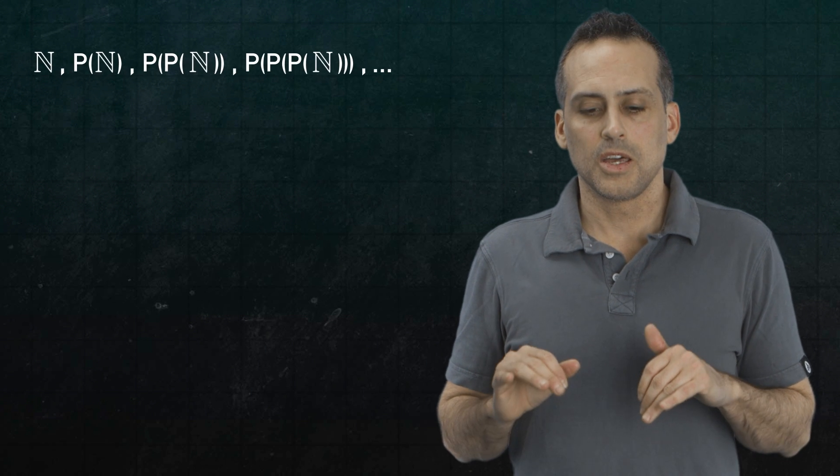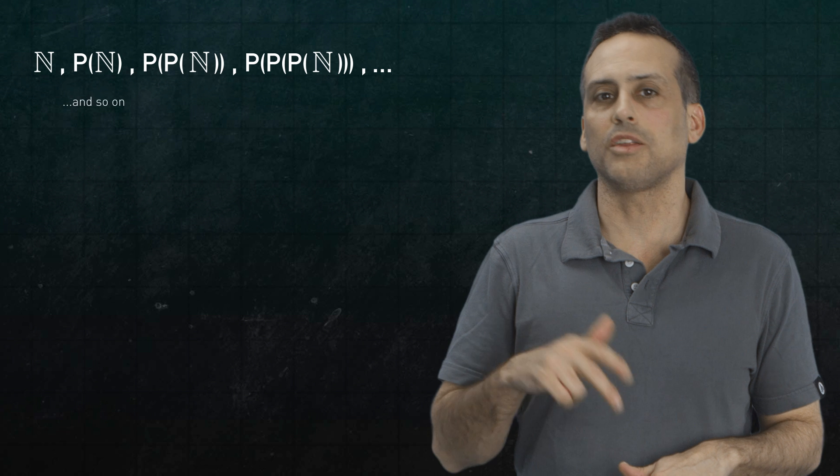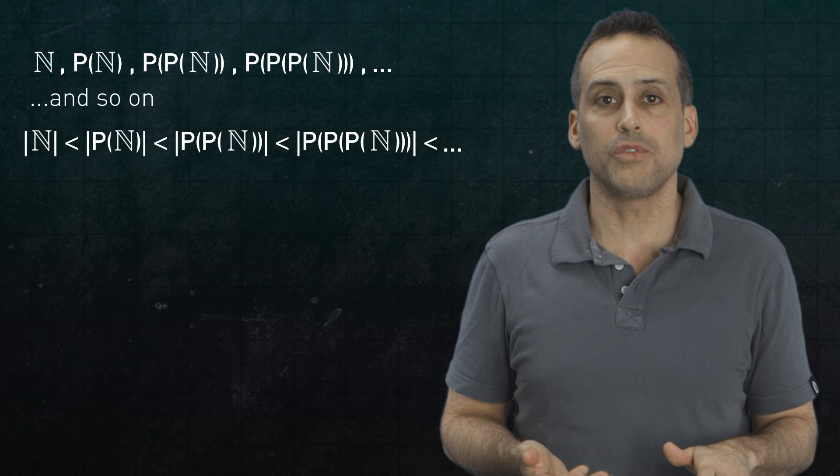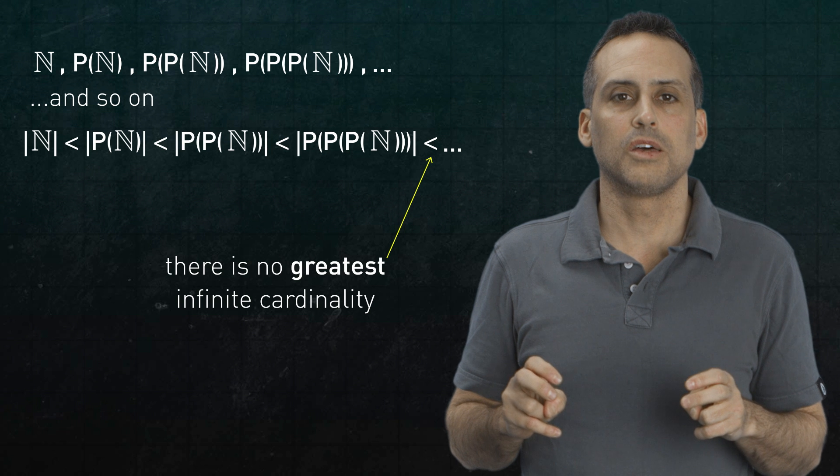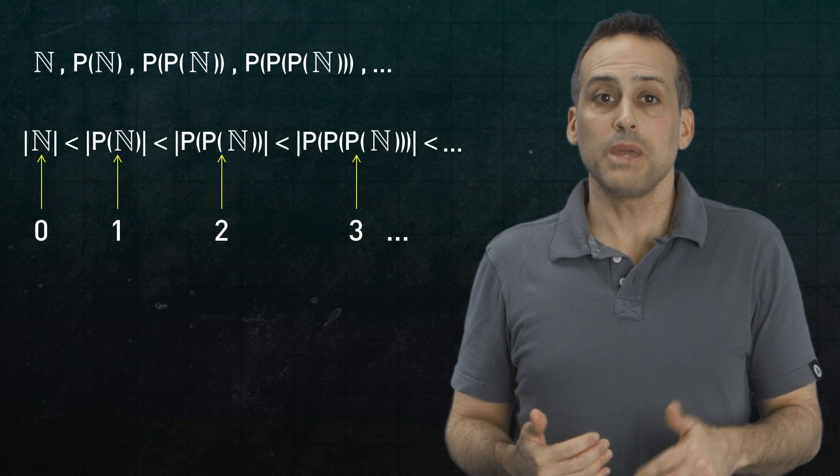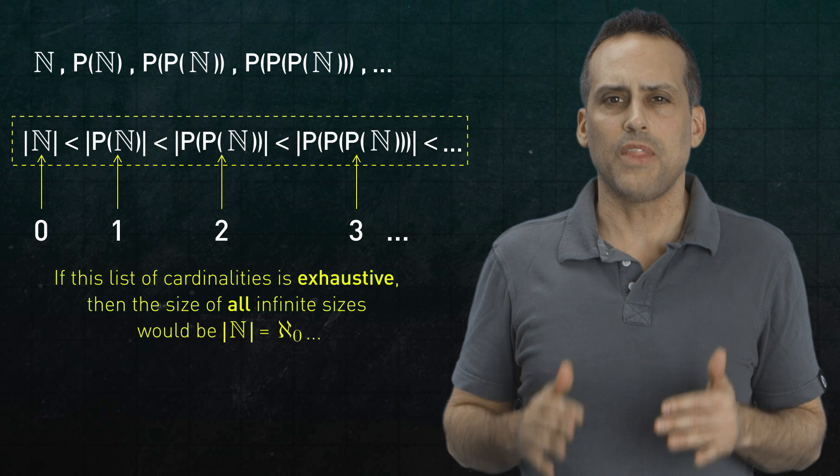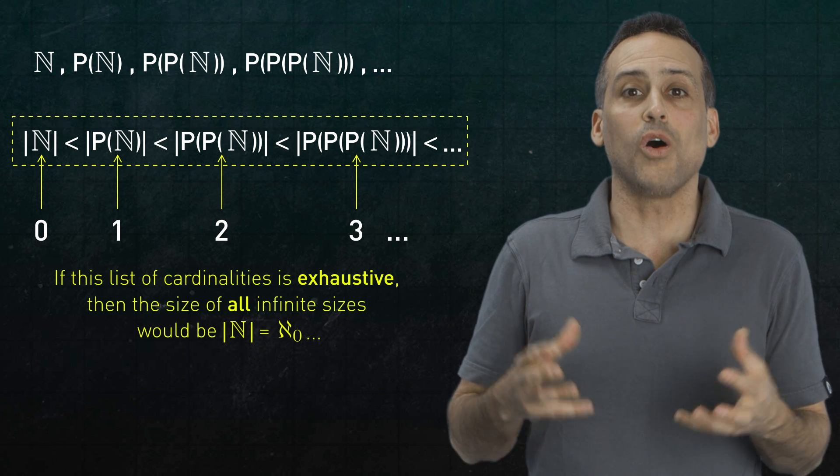Boom. So armed with this theorem, I want to consider the following specific never ending chain of infinite sets. Let's start with the natural numbers N, followed by the power set of N, and then the power set of that power set, and so forth. Each link in this chain will have a cardinality that is strictly greater than that of all the previous ones, according to our theorem, which means there is no largest infinite size. But there's something else interesting. It looks like you can match up this list one to one with the naturals, which means that the cardinality of the totality of these cardinalities of that list is just Aleph-Not. And that's interesting, because is this list of infinite cardinalities complete? If so, then the size of all infinities would be Aleph-Not. Alas, that's not the case, and here's why.